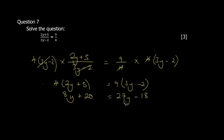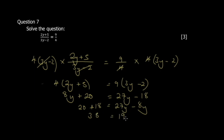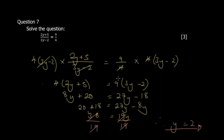Expanding: the right side gives 27y − 18 and the left gives 8y + 20. Moving terms to avoid negatives, we get 27y − 8y = 20 + 18, so 19y = 38. Dividing both sides by 19 gives y = 2.